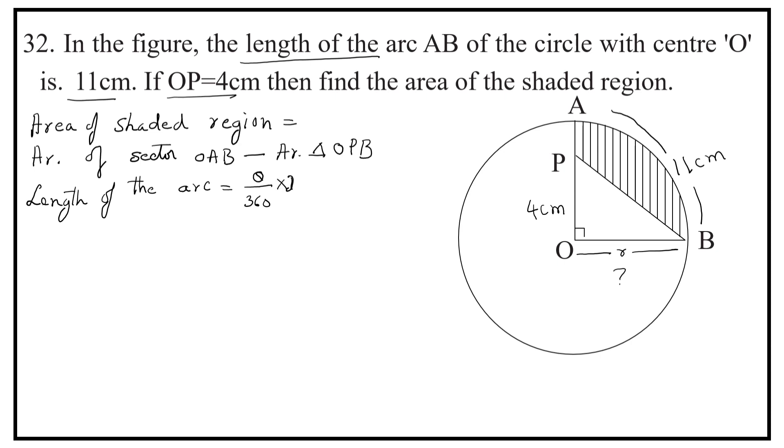We know that length of the arc is equal to theta by 360 into 2 pi R. Length of the arc is 11 cm, theta is 90. We have to calculate the radius.